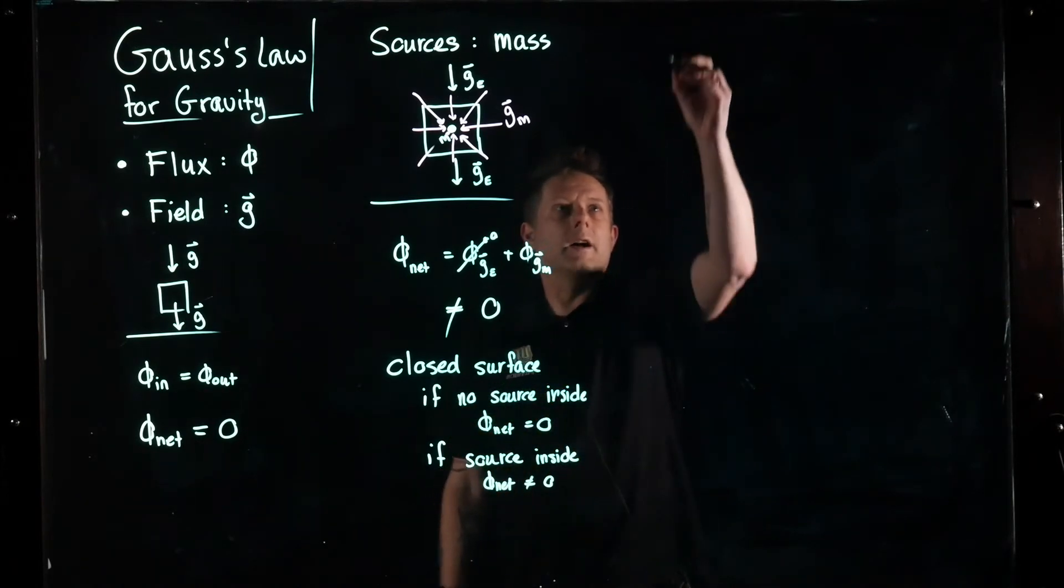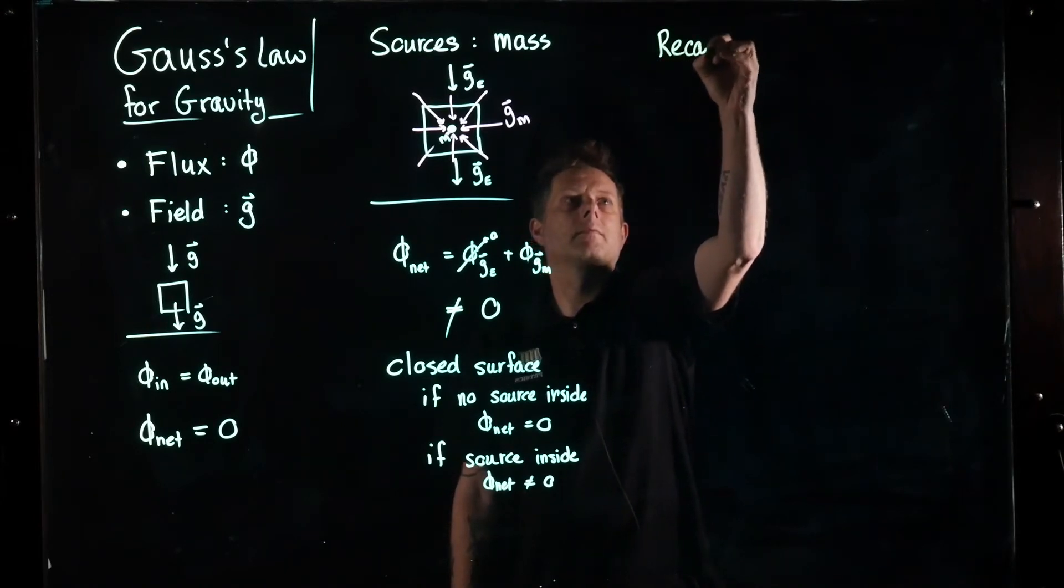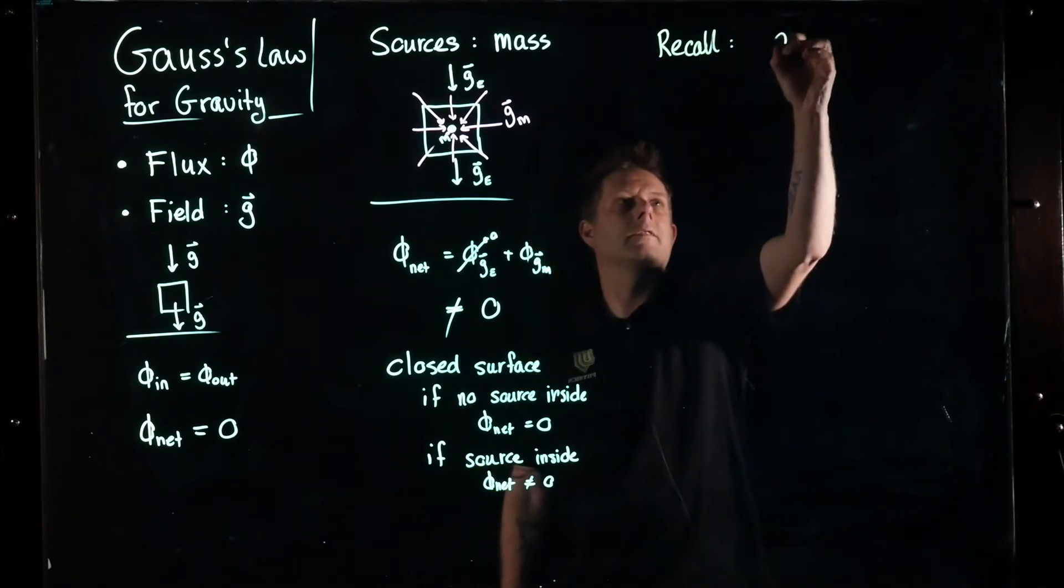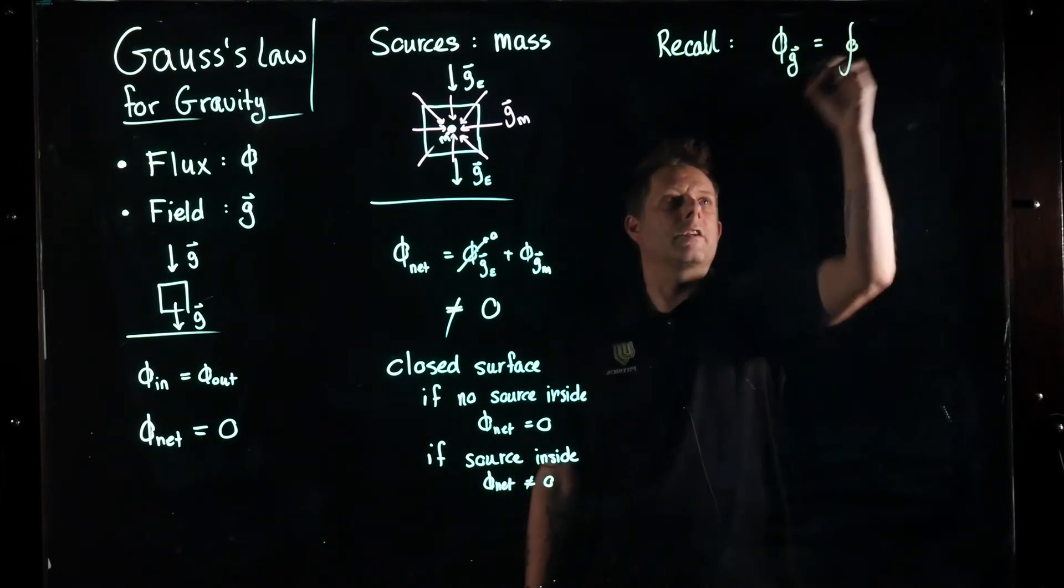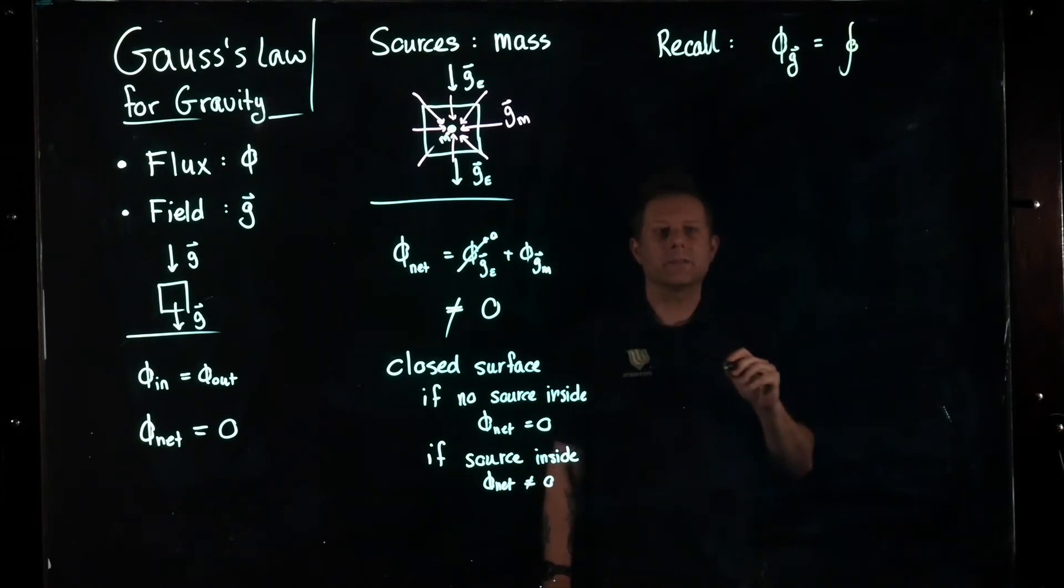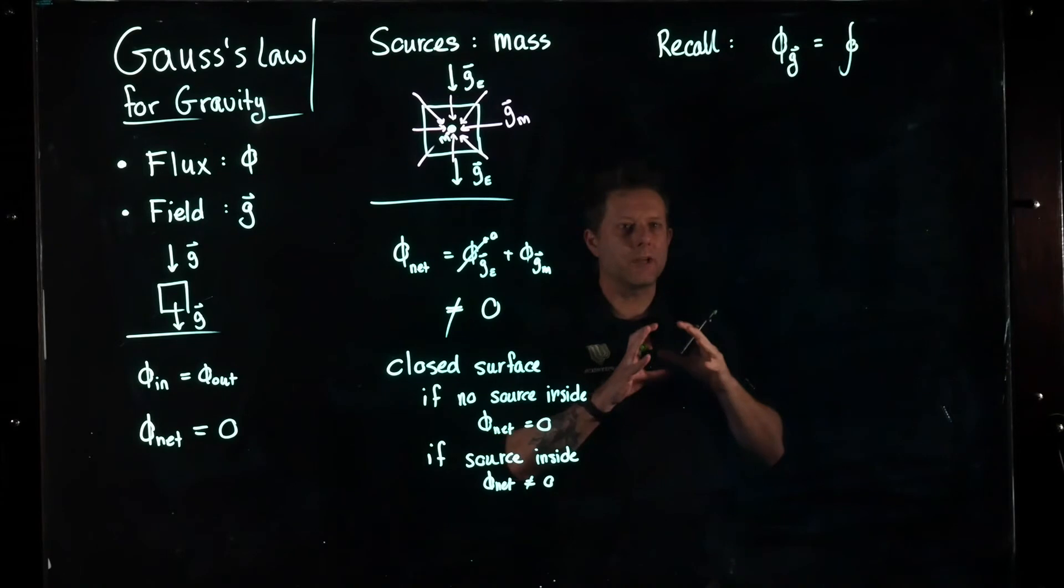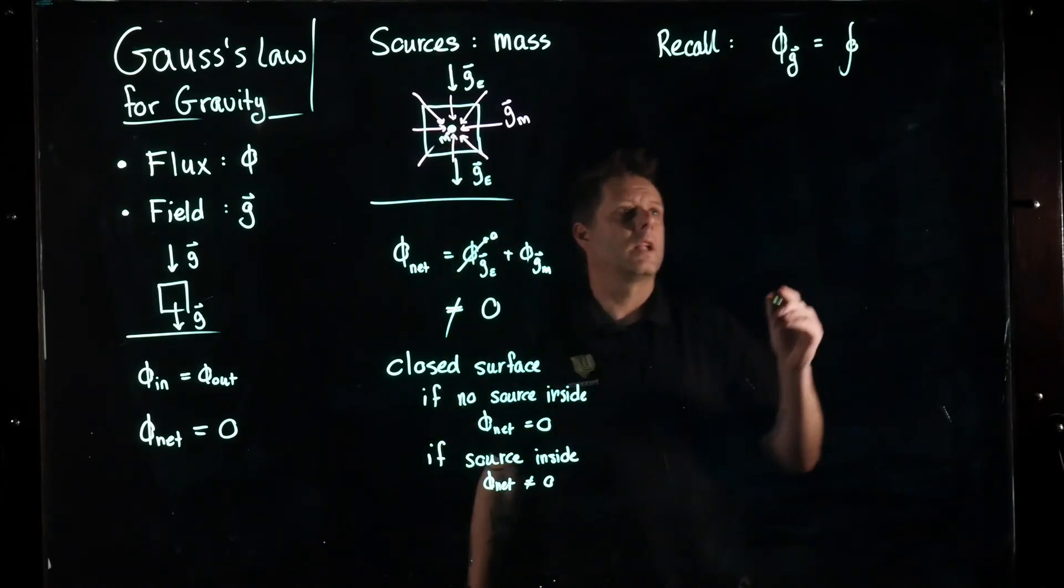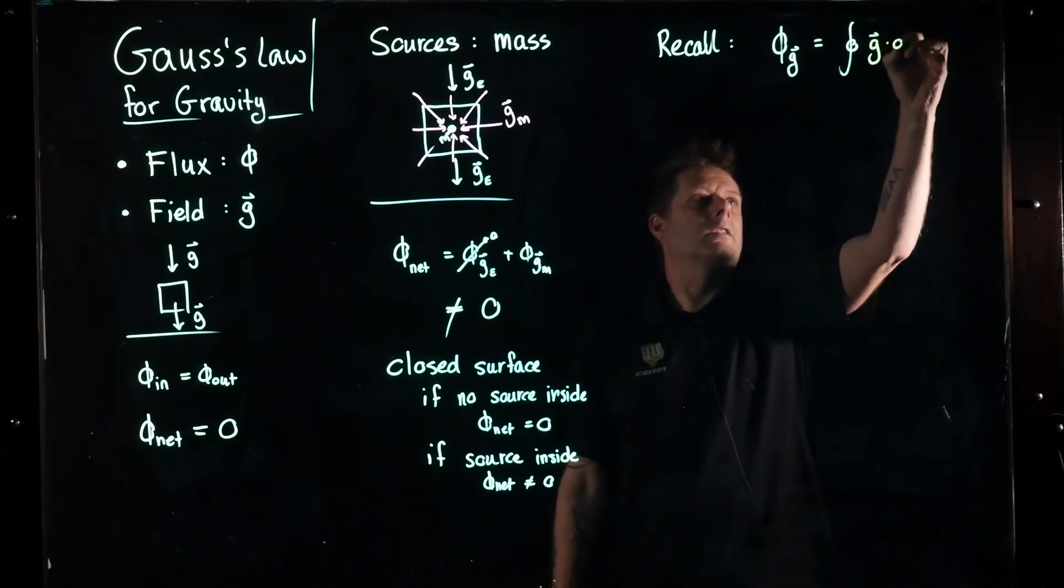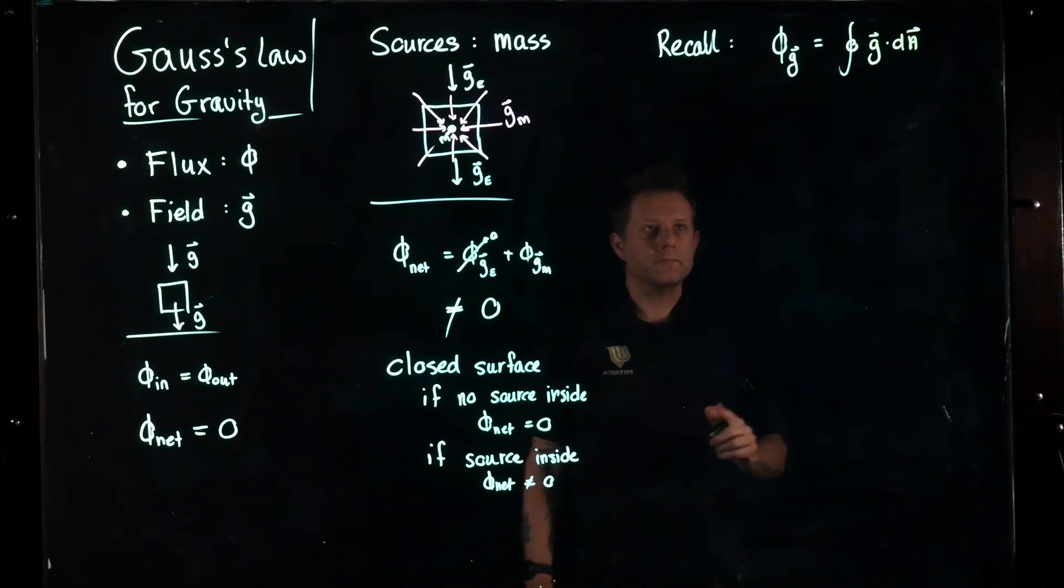And this is really stated in, so recall from last time, we had that the gravitational flux through a closed surface. When we have a closed surface, you put a little circle around the integral sign. It does not mean we do integration differently. It just indicates that the integral has to be completed over a closed surface, like a box, with the gravitational field dotted with this area element. So what does Gauss's Law say?